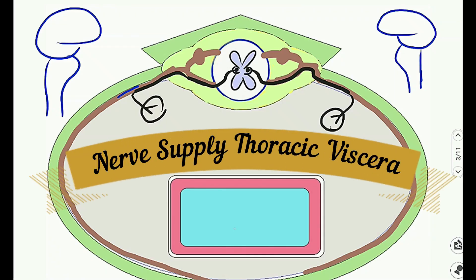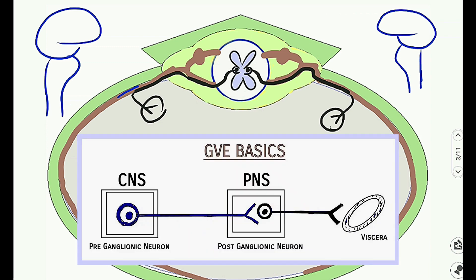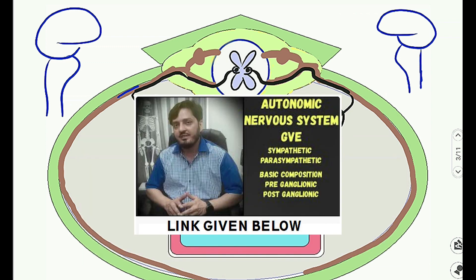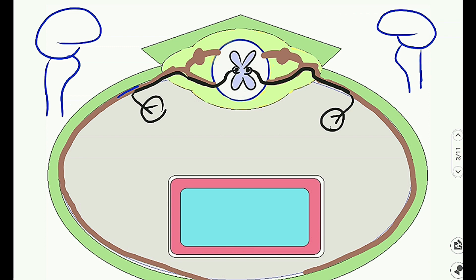Now let's discuss the nerve supply of the viscera through the visceral nervous system. First, motor nerve supply is through both sympathetic and parasympathetic divisions. Both divisions share a basic principle: neuron one — the pre-ganglionic neuron — is in the central nervous system (brain or spinal cord), exits, and synapses with the second post-ganglionic neuron outside the CNS. The synapse location is the ganglia. Details are in my autonomic nervous system video lecture.